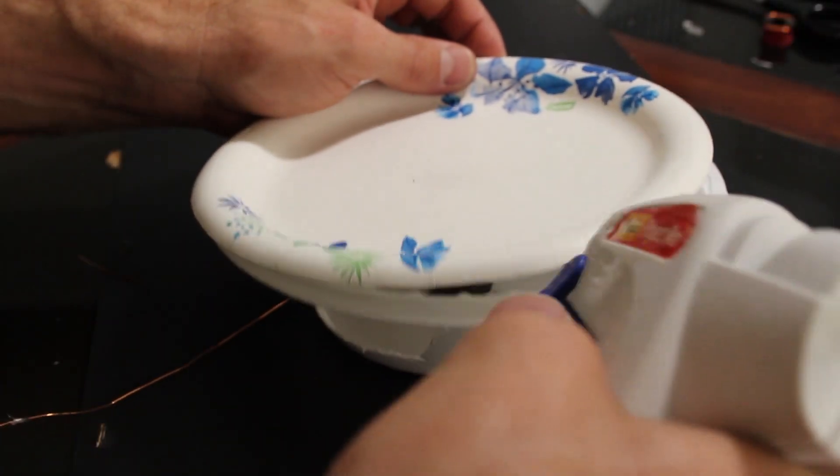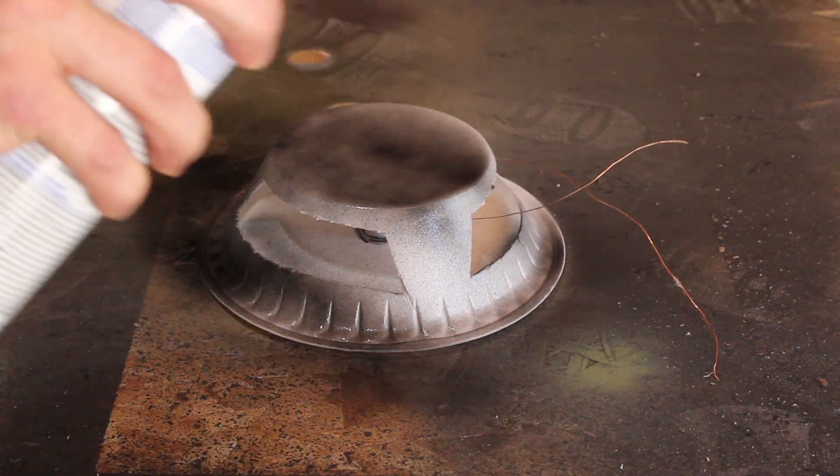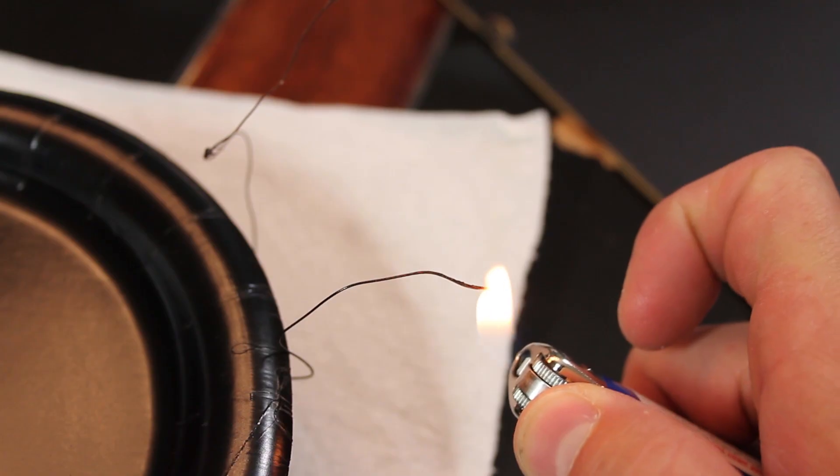So now we can hot glue the plate to the bowl and hit it with a little spray paint for aesthetics. When the paint dries, there's only one thing left to do, and that's remove the coating from the ends of the wires. So I'll do that with a lighter.